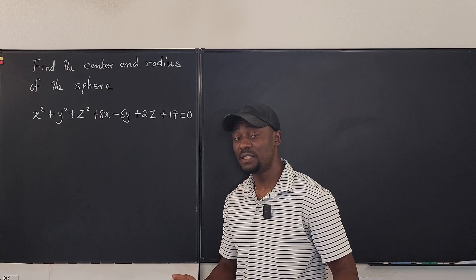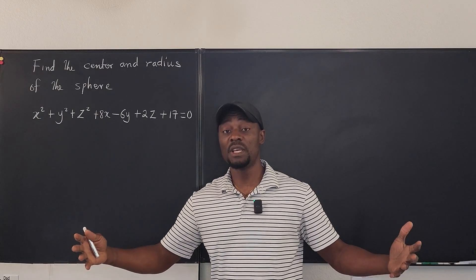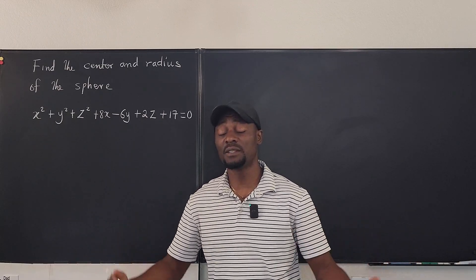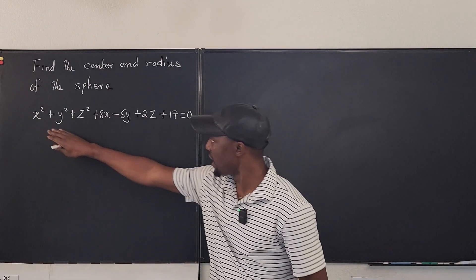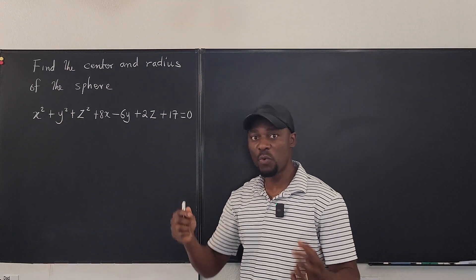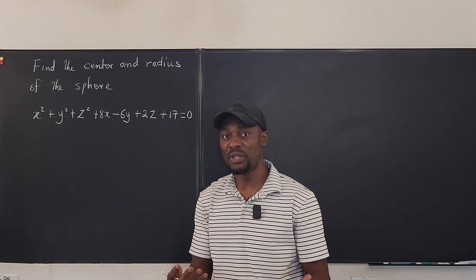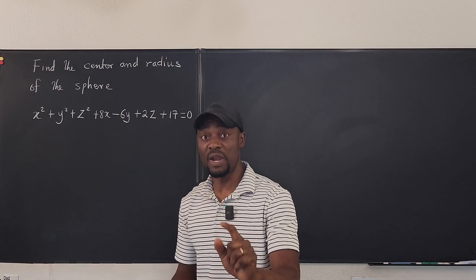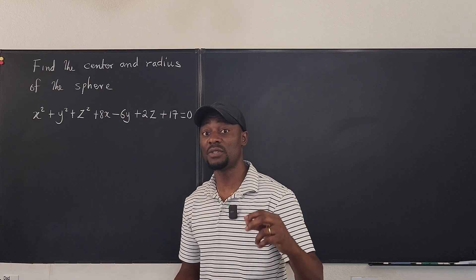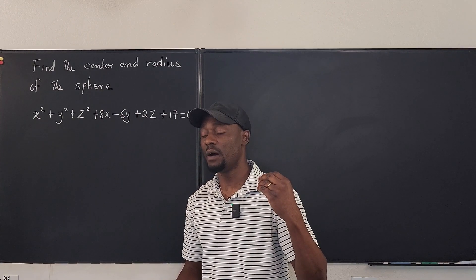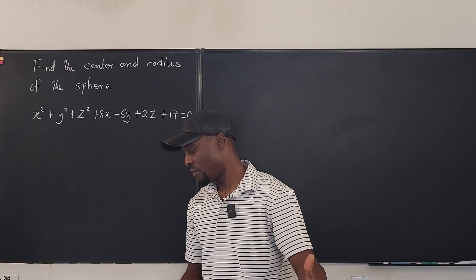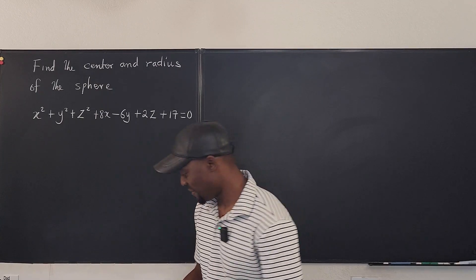The first thing we need to understand is the general equation of a sphere, the standard equation of a sphere rather. So this is actually the general form, but we want to get the standard form, which clearly tells us what the radius is and immediately also tells us what the center is.